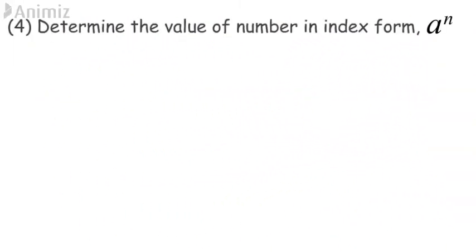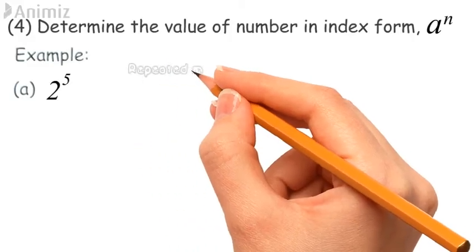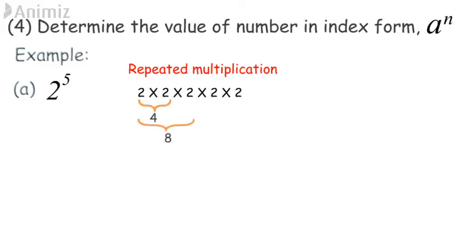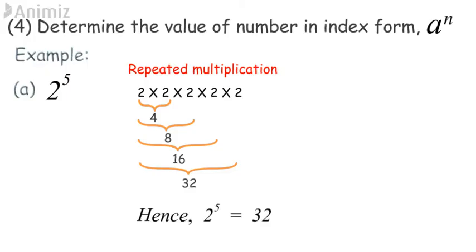To find the value of a number in index form a^n: Example A, find the value of 2 to the power of 5 using the multiplication method: 2 × 2 = 4, 4 × 2 = 8, 8 × 2 = 16, 16 × 2 = 32. Hence, 2 to the power of 5 = 32.